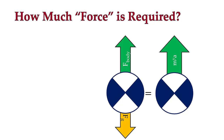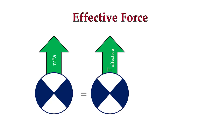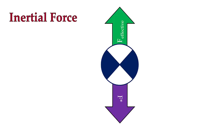We know that the sum of the forces is going to equal the mass times the acceleration. That vector of the mass times the acceleration is the effective force. So we have an effective force. A force equal and opposite to that effective force is referred to as the inertial force. In this condition, you can see that if we add the effective force to the inertial force, then the sum of the forces is going to be zero. If that's the case, we can then solve many dynamic problems as if they were static problems.